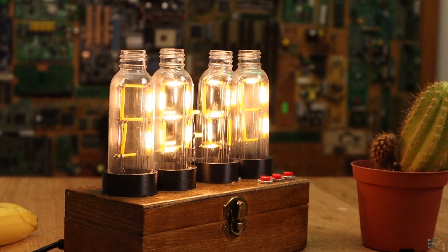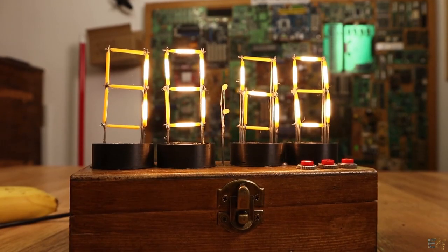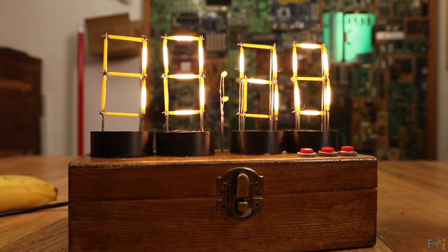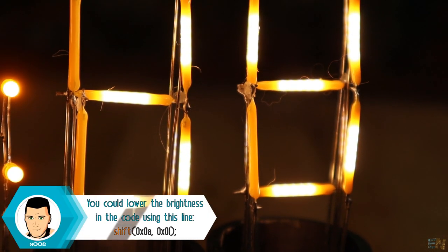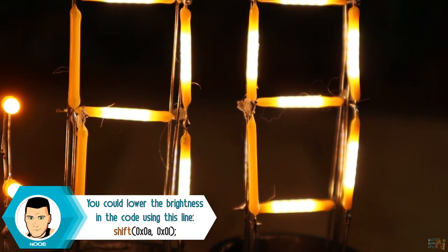So there you have it guys, this is how I've made my vintage look clock based on a homemade 7-segment display that also looks like Nixie Tubes.